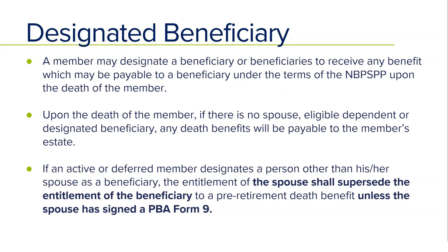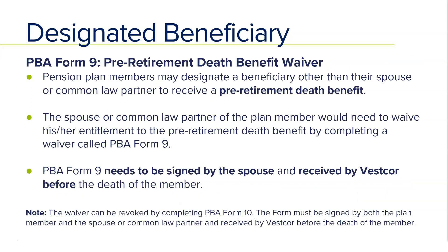Even by naming a beneficiary, a spouse would supersede any entitlement of the beneficiary to a pre-retirement death benefit, unless the spouse would sign a waiver — Form 9. For the pension plan, spouse is defined as married to the person or two years common law.